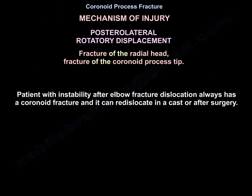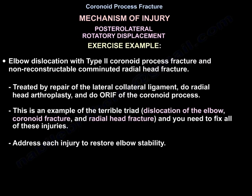Patients with instability after elbow fracture-dislocation always have a coronoid fracture and can redislocate in a cast or after surgery. For example: an elbow dislocation with a type 2 coronoid fracture and a non-reconstructible comminuted radial head fracture is treated by repairing the lateral collateral ligament, performing radial head arthroplasty, and ORIF of the coronoid. This terrible triad — dislocation, coronoid fracture, radial head fracture — requires addressing each injury to restore elbow stability.